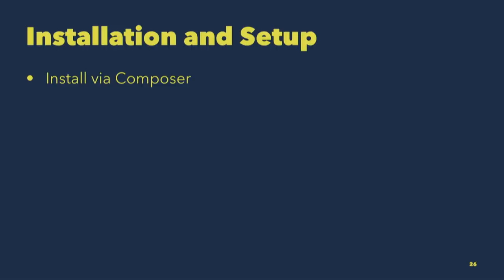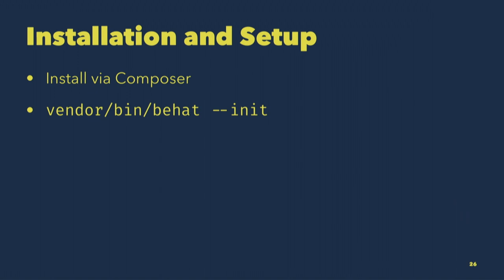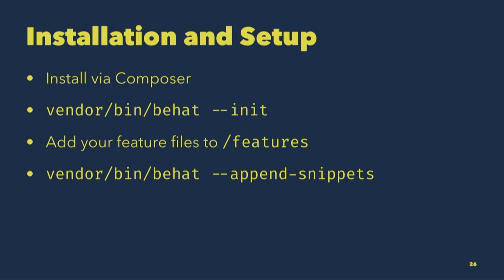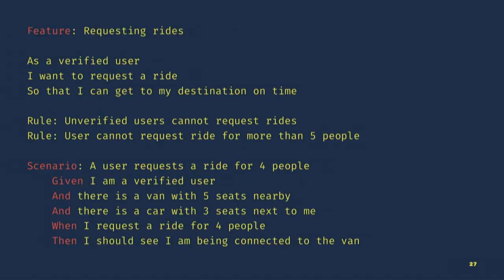Let's talk about Laravel and Behat. Installation and setup is pretty easy — we're going to start to get into code now. It's installed via Composer, as you'd expect. After you install it, you run 'vendor/bin/behat --init.' What that does is create a features directory in your project for all your feature files. It's also going to create a base feature context class that you're going to use to populate your tests. You'll add your feature files to features, and run 'vendor/bin/behat --append-snippets' — that will take the given/when/then steps in your scenarios and stub them out inside the feature context file.